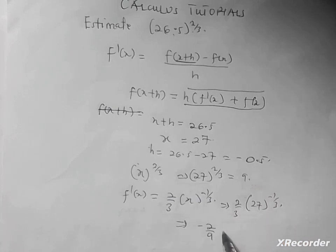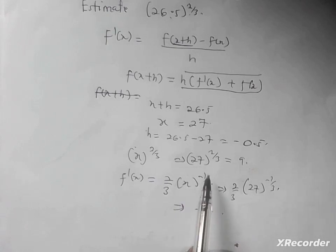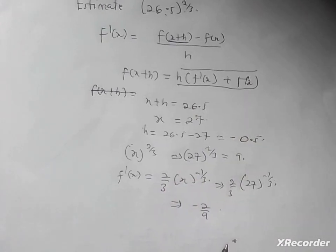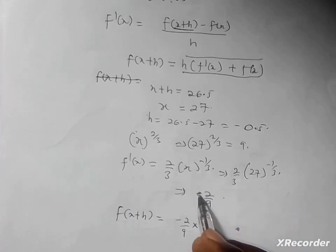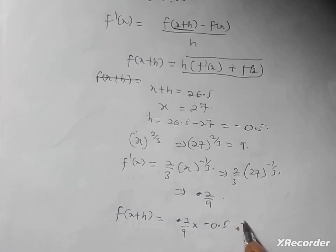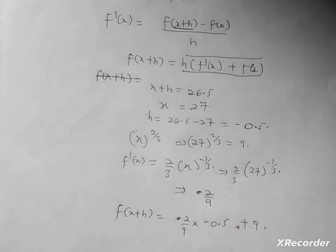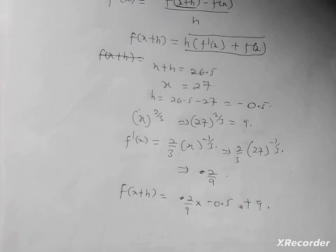Now I have my f'(x), I have my h. I'm going to have my f(x+h), which is a small change, and our estimation will be 2/9 times negative 0.5 plus our f(x), that is 9. So 2/9 times negative 0.5 is giving negative 1/9, then plus 9, and this is giving me 8.8889.